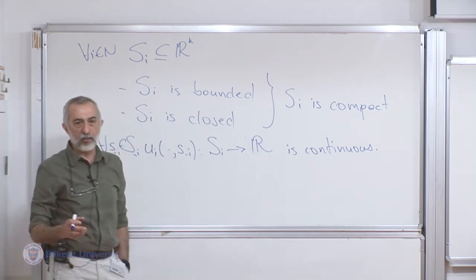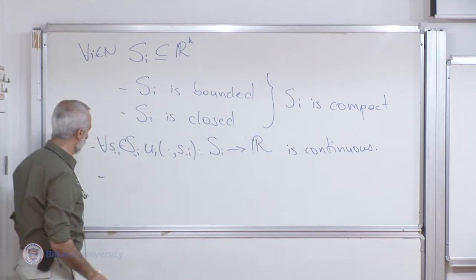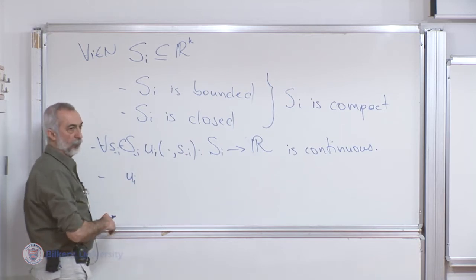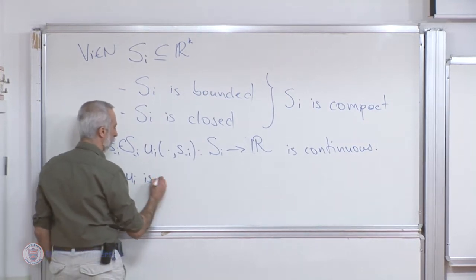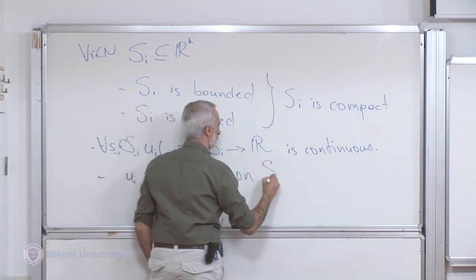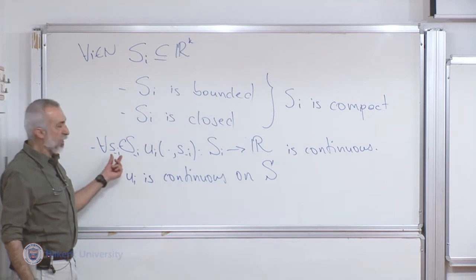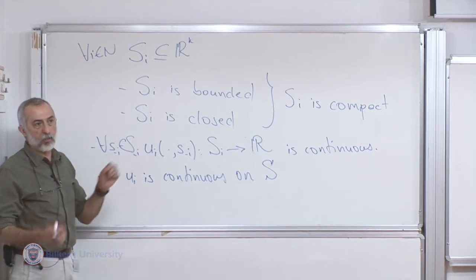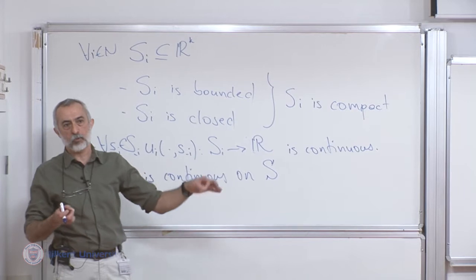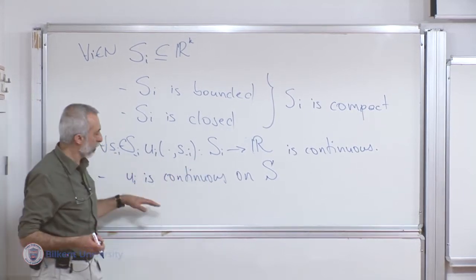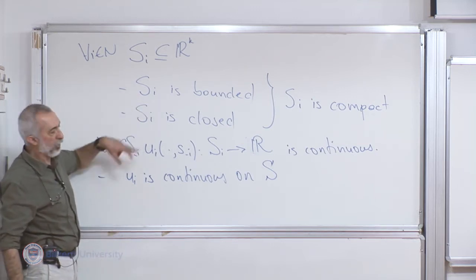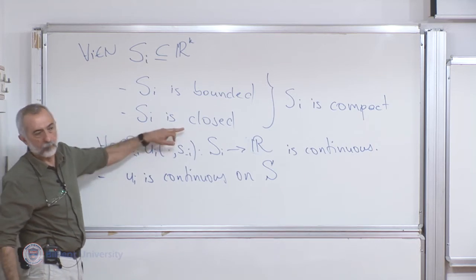Later on we realized that was not sufficient. What we had to have was continuity over the overall space, because if it was not continuous with respect to s_{-i}, we had examples where the best response, even though it was non-empty-valued, could jump from one point to another. We also discovered that the strategy set should be convex — so let me add that here.